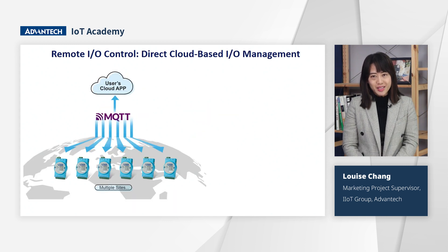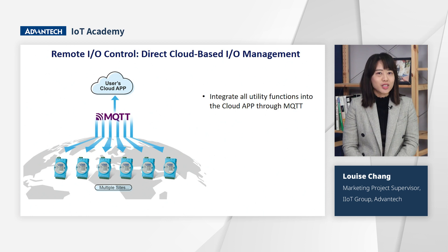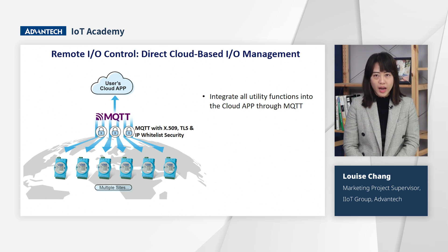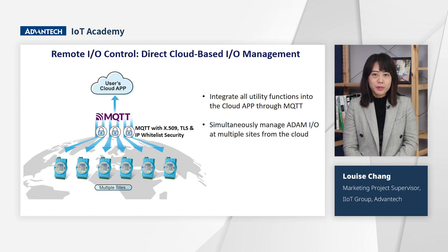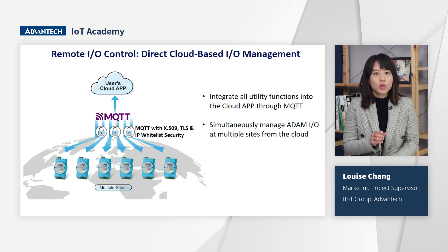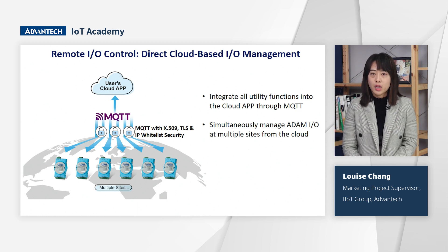The ADAN Cloud I.O. series integrates all utility functions into a cloud application through MQTT, fortified with X.509, TLS, and whitelisting security features over the internet. This integration empowers IoT users to directly manage I.O. from the cloud. Importantly, rapid deployment emerges as a highly beneficial feature of the Cloud I.O. series. Once equipped with the group deployment functions, users can configure the initial module and replicate the settings to others directly via MQTT through the internet, transcending geographical limitations.